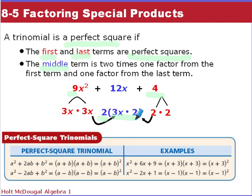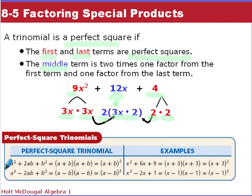For example, 9x² factors into 3x and 3x, and 4 is a perfect square that factors into 2 and 2. You take the square root of A to get 3x, and the square root of 4 is 2. Multiply those together, then times that by 2, and that must give you your middle term B. So write this down: perfect square trinomials are in the form Ax² plus 2ab plus B².